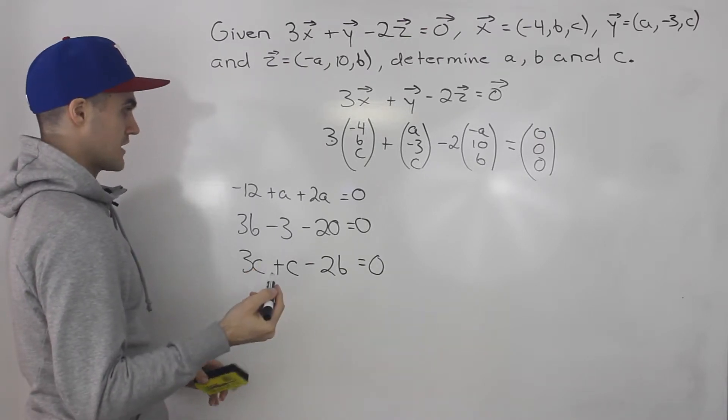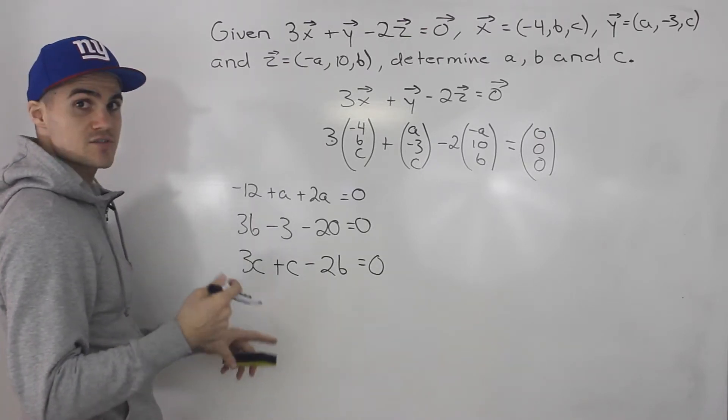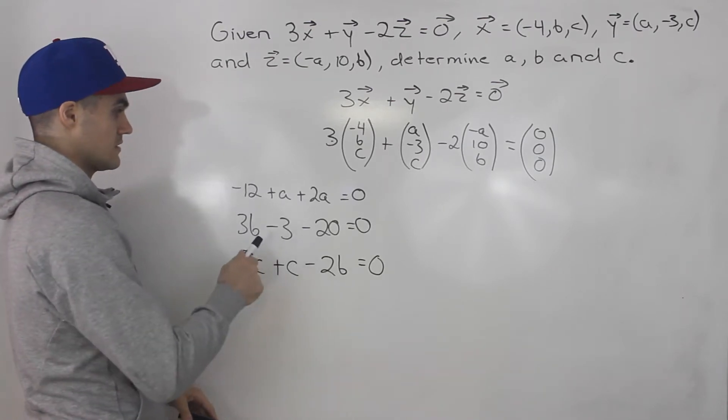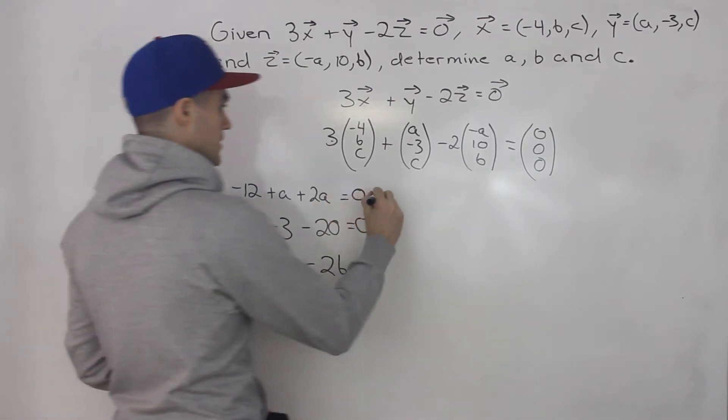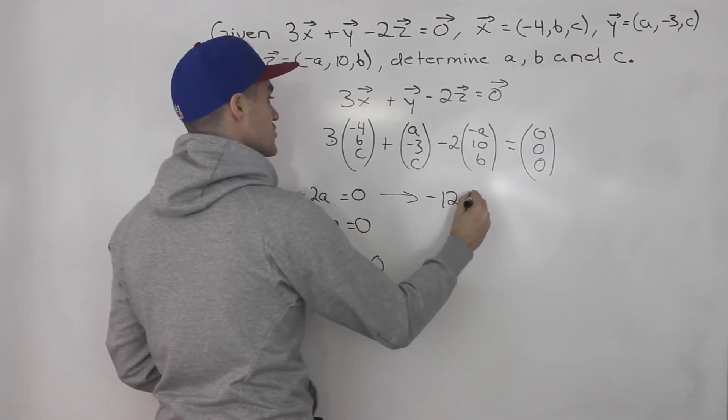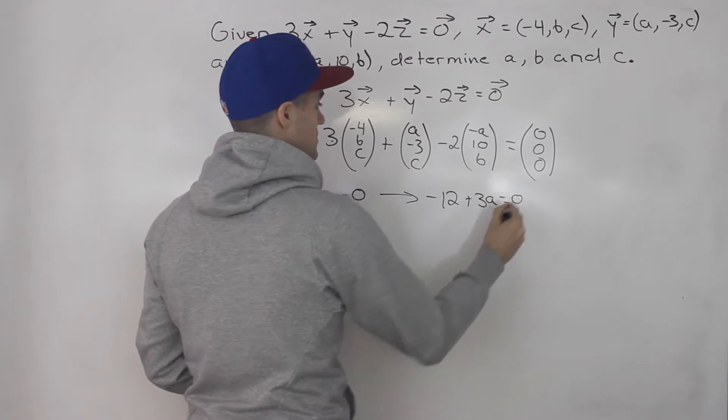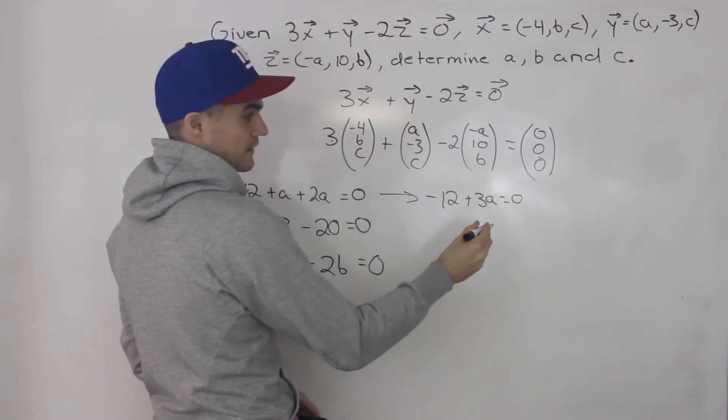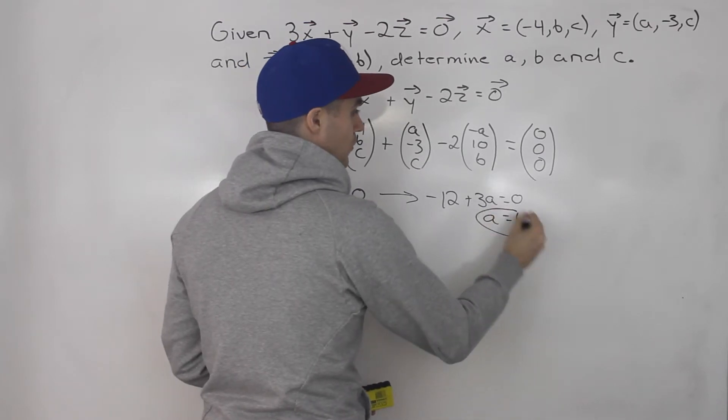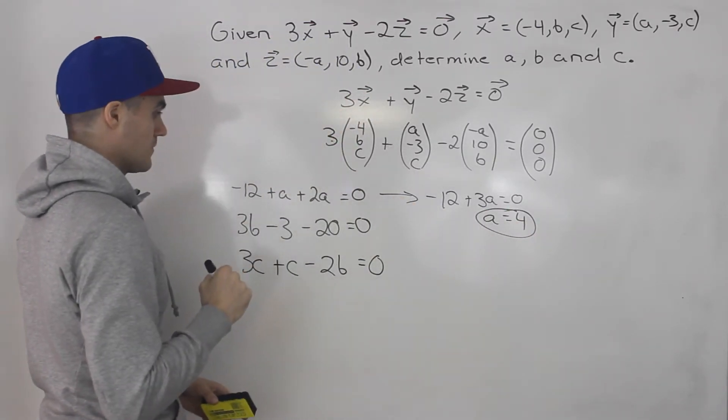And now we just have to solve with these three equations for a, b, and c. So notice that it's pretty easy to solve for a with this equation. If we simplify, we'll have -12 plus 2a equals 0. Then we can bring the -12 over, divide both sides by 2, we'd get an a value of 4.